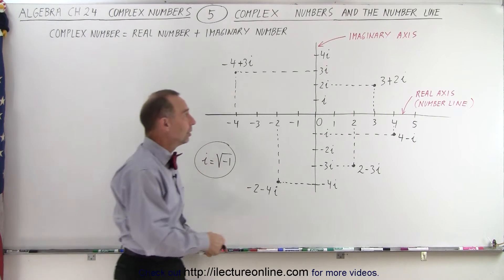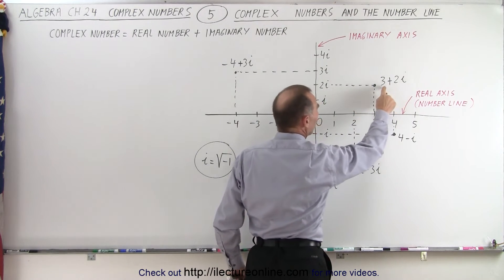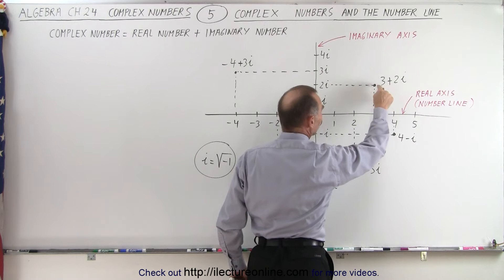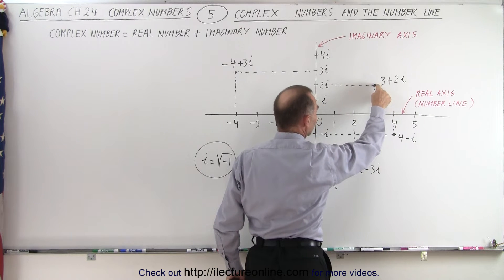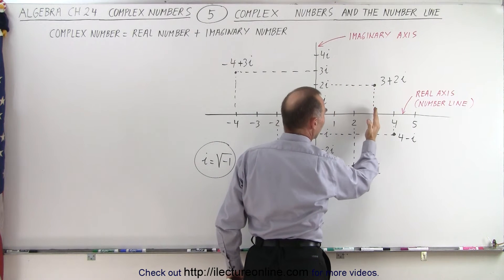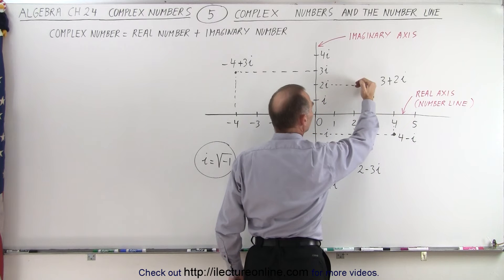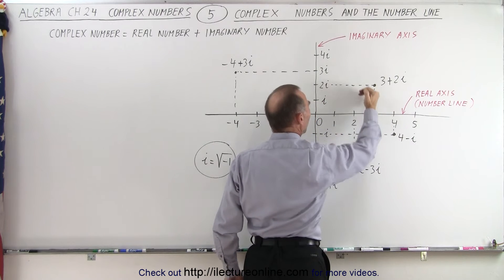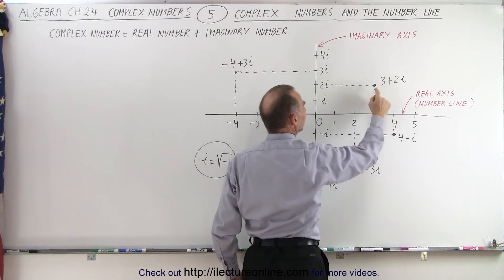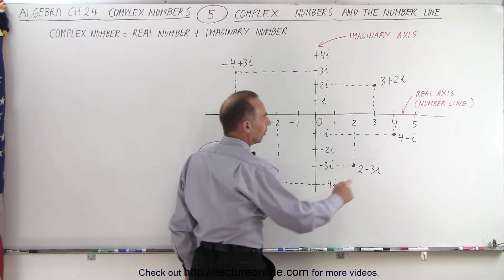So for example, 3 plus 2i, which is the sum of a real number and an imaginary number, can be found right here. Notice you move 3 units to the right on the real axis, 2 units up on the imaginary axis, and that's where you find 3 plus 2i.